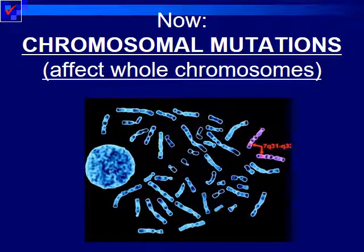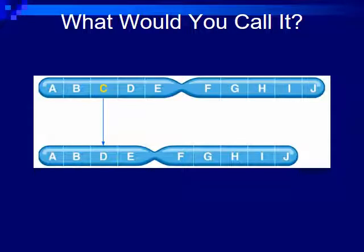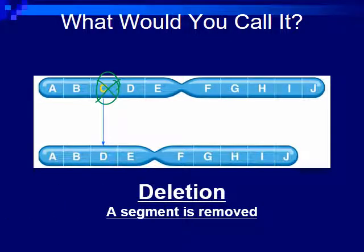Up next, we're going to talk about chromosomal mutations. Now we're not talking about just swapping out one base — we're having damage at entire sections of DNA, where hundreds upon thousands of different DNA bases are being changed. We have genes A, B, C, D, E, F, and so on. If you take a look, the C was removed — this is what we call a deletion, where any segment of the chromosome is removed.